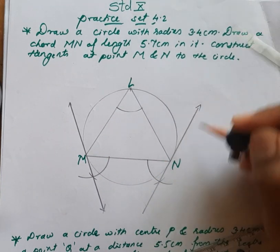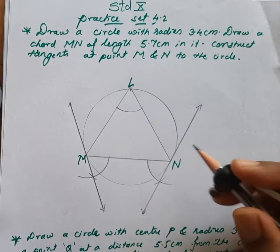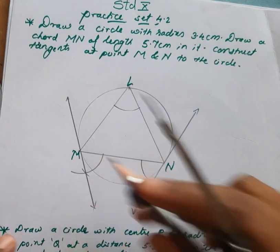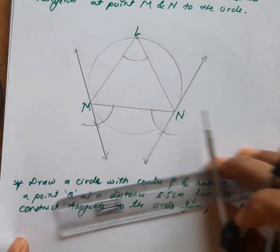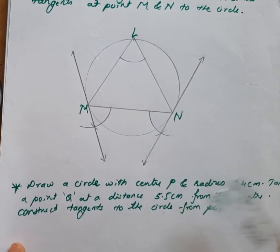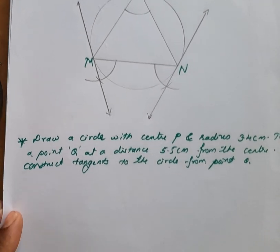From these two points we are drawing the tangent — very simple. These are the two tangents. Now in the second question: draw a circle with center P of radius 3.4 centimeters.